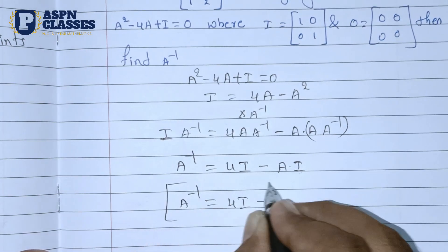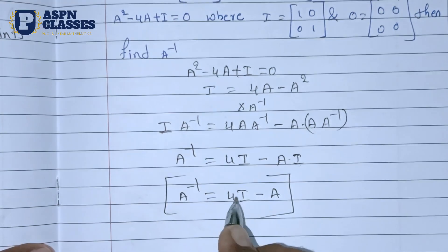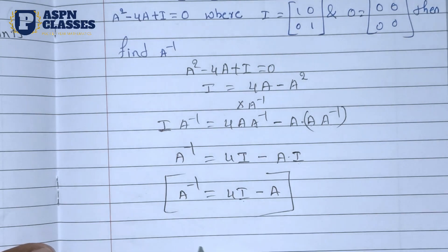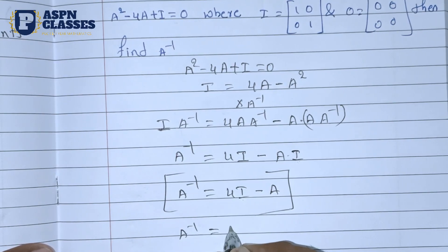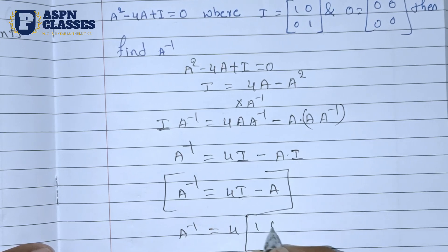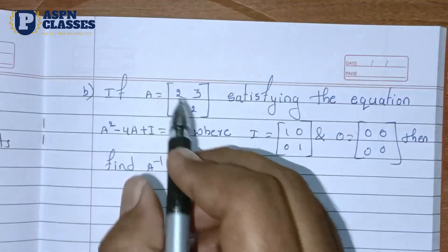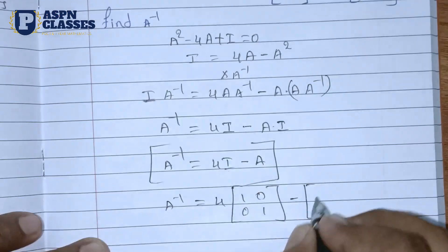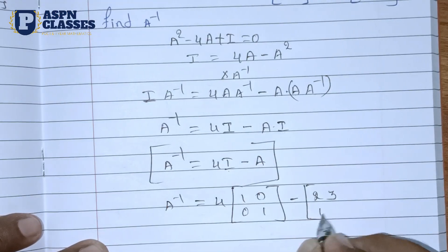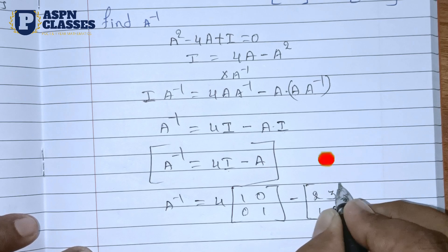So the formula is: A inverse equals 4I minus A. Substituting: 4 times the identity matrix is [4,0; 0,4], and the matrix A is [2,3; 1,2]. So A inverse equals [4,0; 0,4] minus [2,3; 1,2].